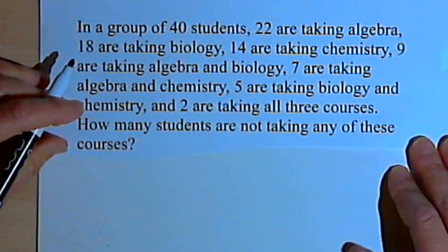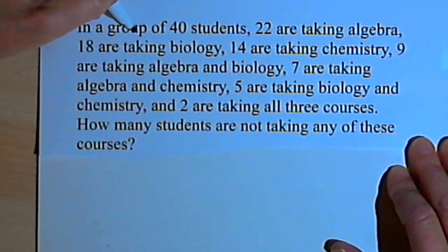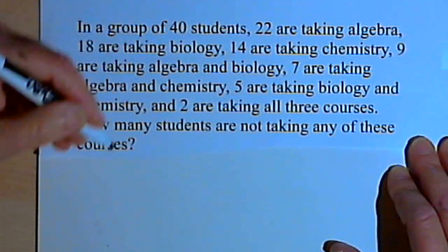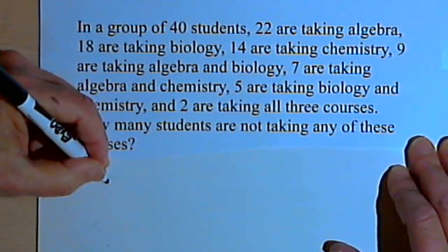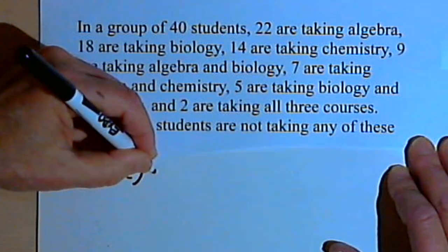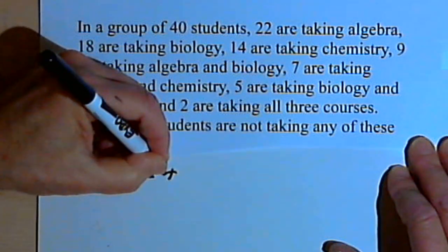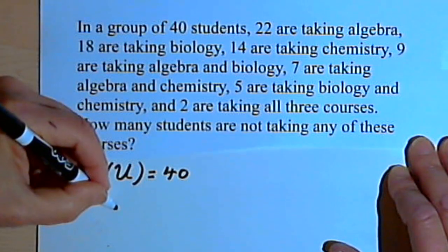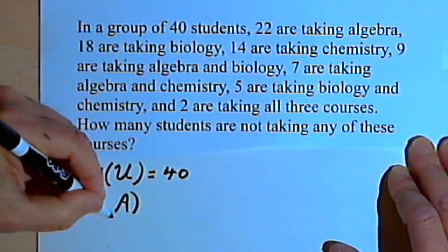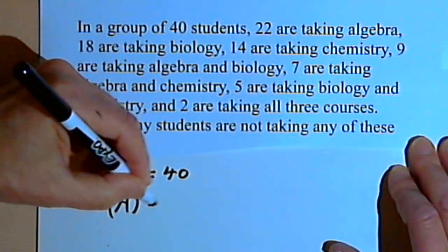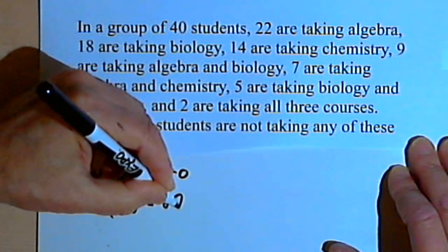Let's copy the information down. I'm told there are 40 students, so that means my universal set is going to contain 40 elements. So the size of the universal set is 40. There are 22 students taking algebra, so we'll use A for the set of students in algebra, and the size of that set is 22.